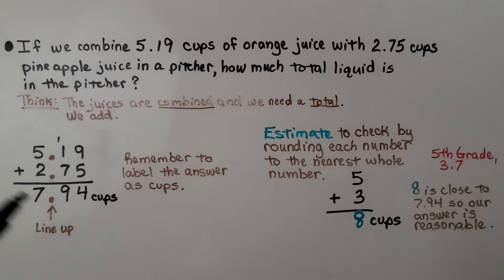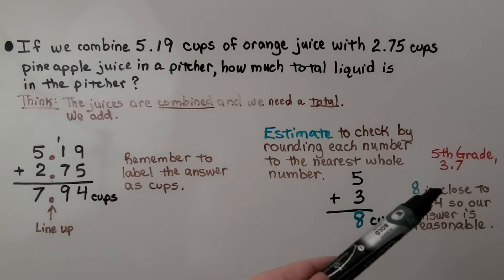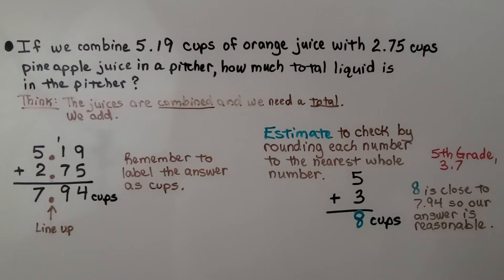And 8 is close to 7 and 94 hundredths. So our answer is reasonable. And we learned about rounding decimals in 3.7 back in 5th grade. That will be linked in the description too as a refresher.